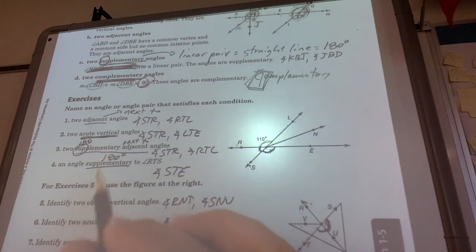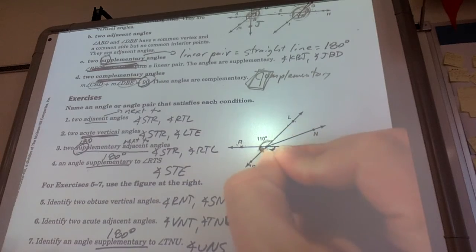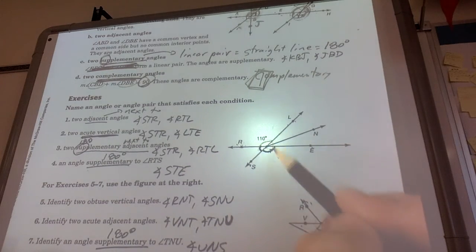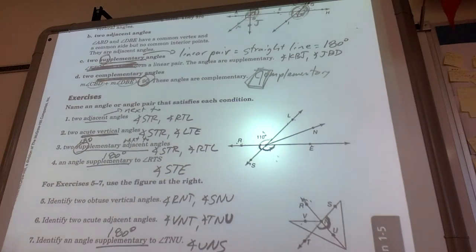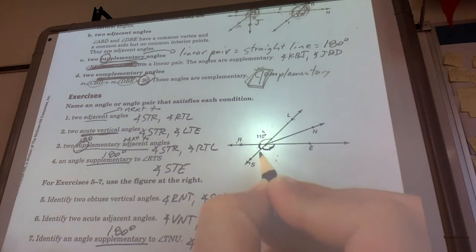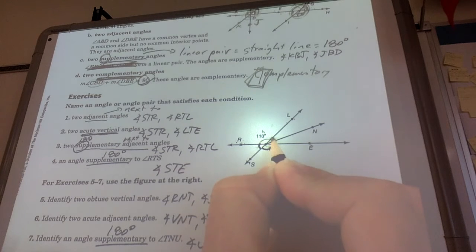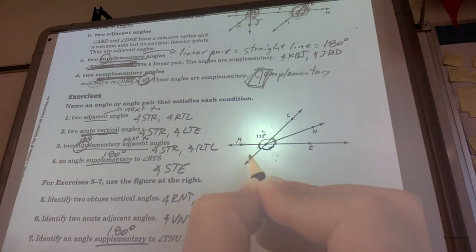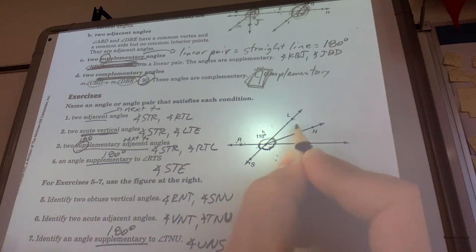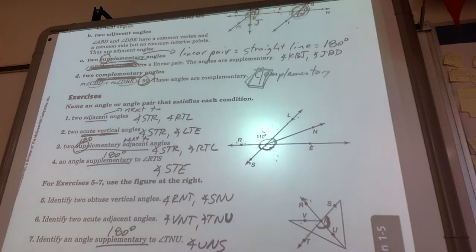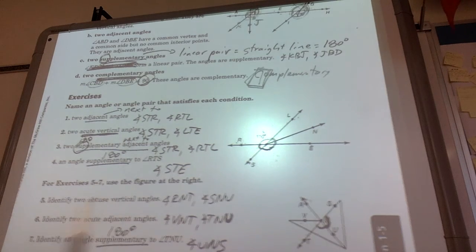Two acute vertical angles. So we've got to be careful here. I can't use the 110 right there. I can't use these two because that's obtuse vertical angles. We're going to do acute. I'm going to do this one. And then it's that whole thing right there. So you've got to kind of ignore Ray TN. And we've got to look at STR and LTE. Notice the vertex is the same in both of those, looking at that middle letter.